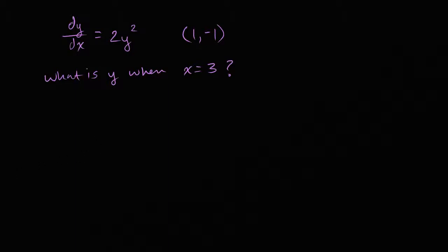The key with a separable differential equation — and that's a big clue, even calling it a separable differential equation — is that you separate the x's from the y's, or all the x's and dx's from the y's and dy's. So we rewrite it: dy/dx is equal to two y squared.